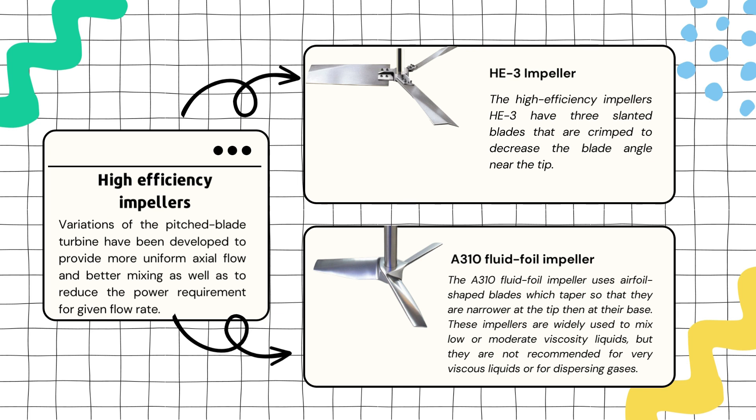One example of a high efficiency impeller is the HE3 impeller, which has three slanted blades designed to increase the blade angle near the tip. This design ensures more uniform axial flow and better mixing. Another example is the A310 fluid foil impeller, which uses airfoil-shaped blades that taper, making them narrower at the tip than at their base.